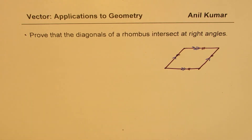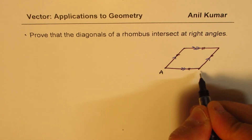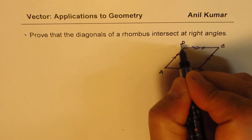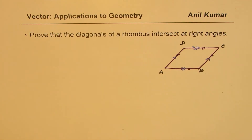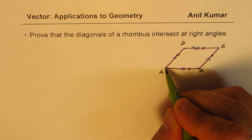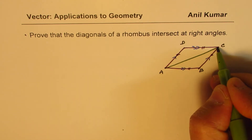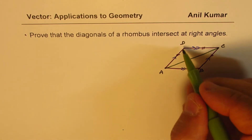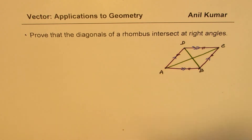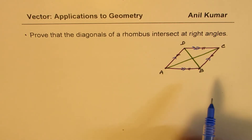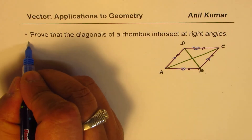We need to prove that the diagonals intersect at right angles. Let's label the vertices: this is A, B, C, D. The diagonals are AC and BD. We want to prove that they intersect at right angles.